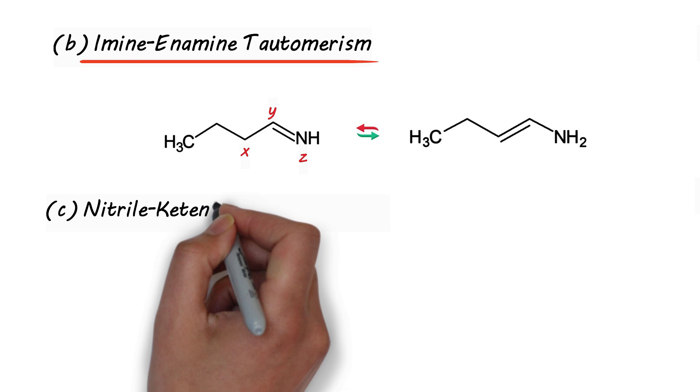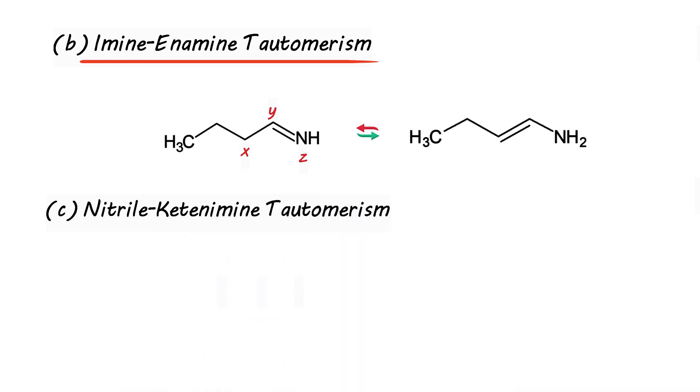Next we have nitrile-ketamine-enamine tautomerism. Nitriles are actually cyanides. They do have XYZ structural feature and X is sp3 hybridized containing a hydrogen atom. Clearly H will migrate as H+ to that of nitrogen to form ketamine-enamine.